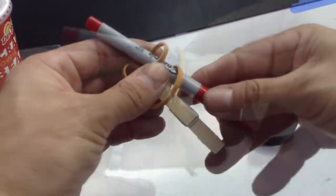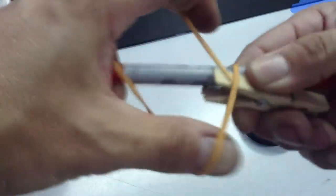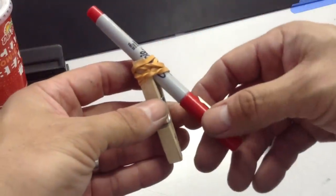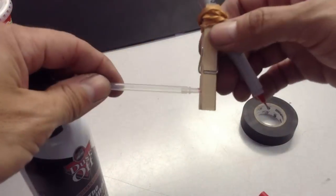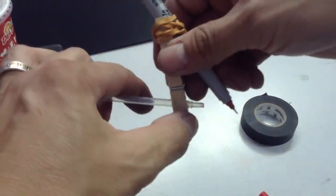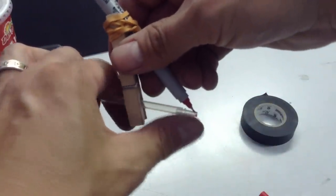Once you've got your rubber band in place, go ahead and attach that whole assembly onto the straw.